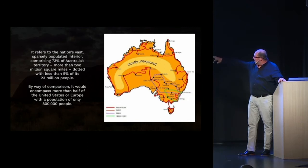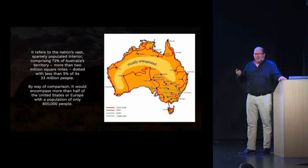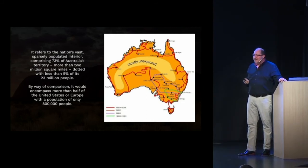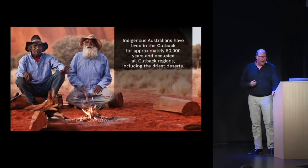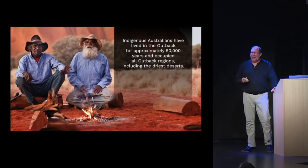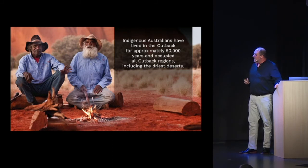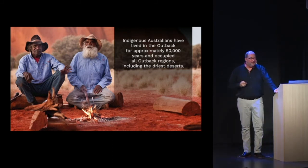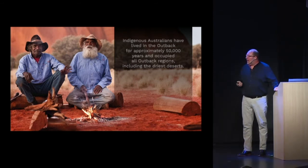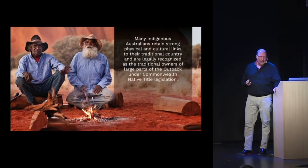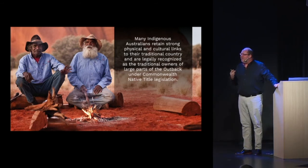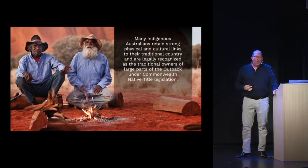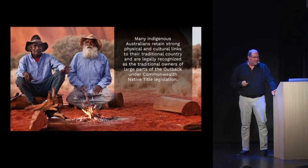You can see in the center area it says mostly unexplored — people have gone through there, but most of this area has not been charted still today. Indigenous Australians, the Aborigines, have lived in the Outback for approximately 50,000 years and have occupied almost all of these regions, including the driest deserts. Many Indigenous Australians still retain very strong spiritual and physical links to this land, even though many have moved to the cities.